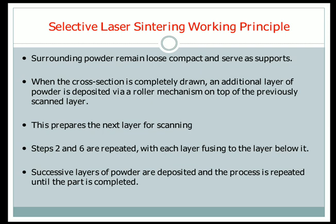The manufacturing steps are repeated to produce the next three-dimensional model of the same cross-section — this method is useful for mass production. After manufacturing one product, a layer is prepared on top and manufacturing of another component begins. Successive layers of powder are deposited and the process is repeated until the part is completed. This is how a three-dimensional model is manufactured using the Selective Laser Sintering method.